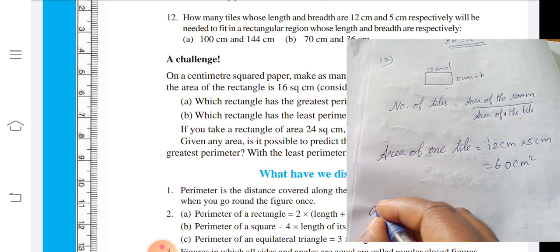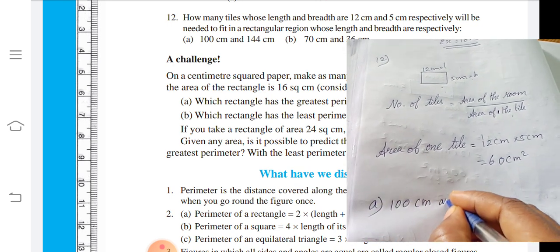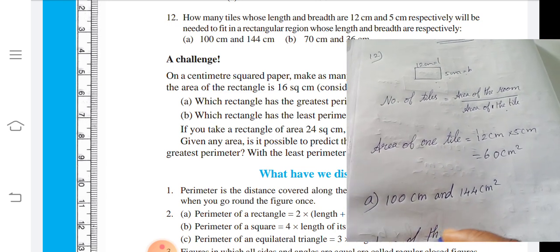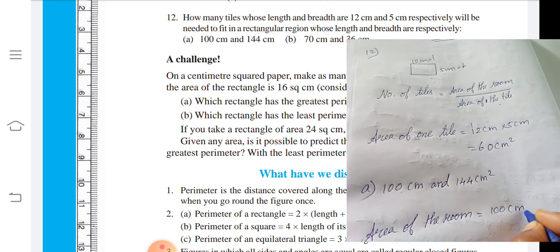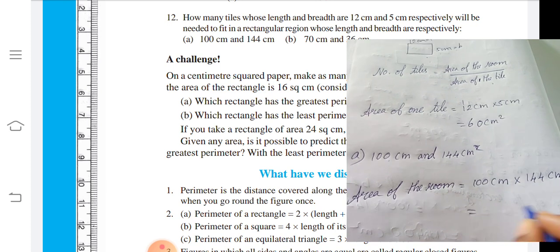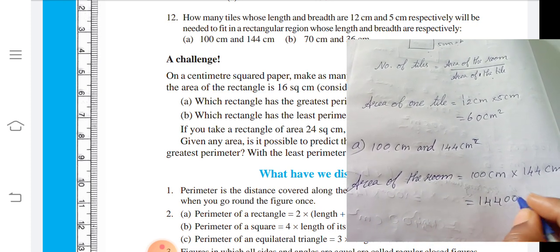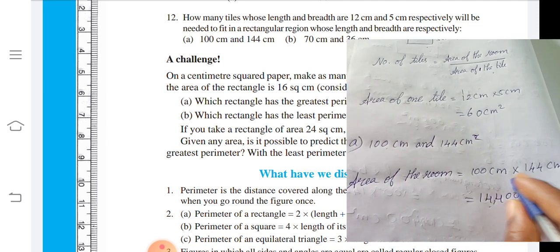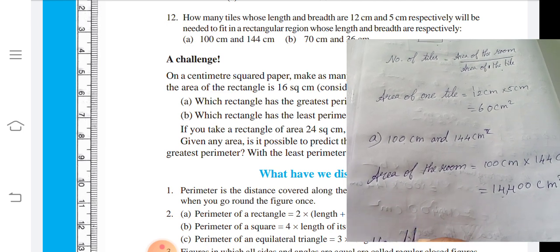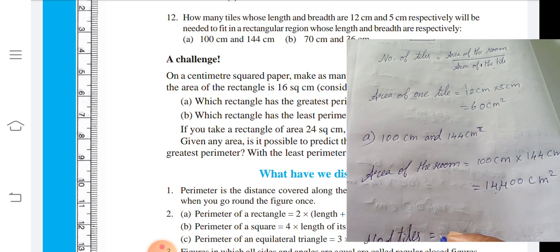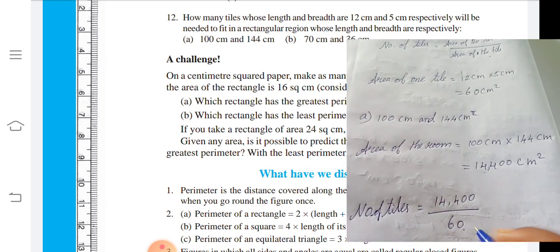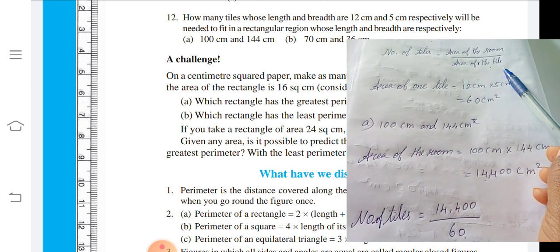One tile is 60 cm square. Next, what do we need to find? Area of the room. The area is 100 cm times 144 cm. 100 times 144 equals 14,400 centimeter square. Using the formula, area of the room divided by area of one tile.